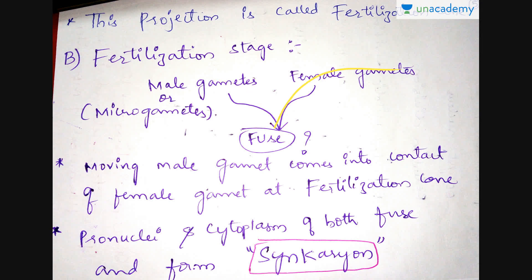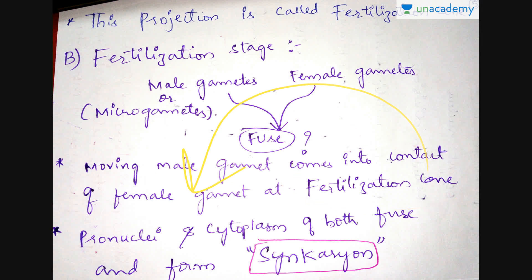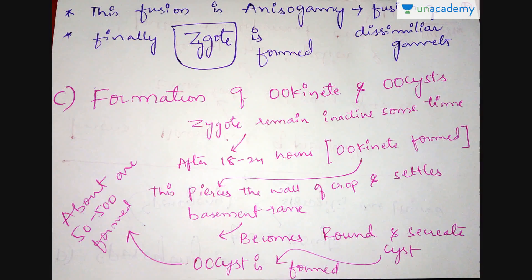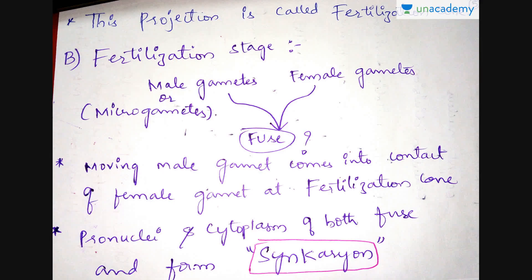The second stage is the fertilization stage, where the male and female gametes formed earlier are fused. The male gametes keep moving continuously and come into contact with the female gametes at the fertilization cone. The male gamete's pronuclei and the cytoplasm of the female nucleus fuse together, leading to the formation of a synkaryon. This fusion is called anisogamy — the fusion of dissimilar gametes. Finally, after the formation of the synkaryon, a zygote is formed.